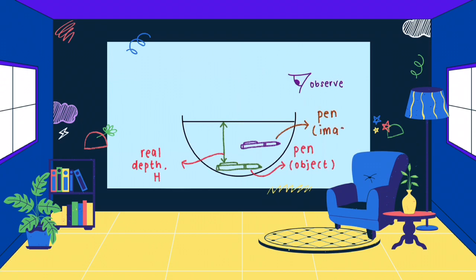Actually, the thing that you saw is not the real pencil, but it is the image of the pencil. The depth of the image is known as apparent depth. The apparent depth is shorter than the real depth. Oh, I get it now.